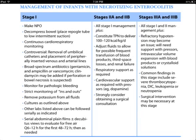For Stages 2a and 2b, continue all Stage 1 management and start TPN to deliver 100–120 kilocalories per kilogram per day. Adjust fluids to account for frequent transfusion of blood products, third-space losses, and renal failure. Provide respiratory and cardiovascular support as required, and strongly consider obtaining a surgical consultation.